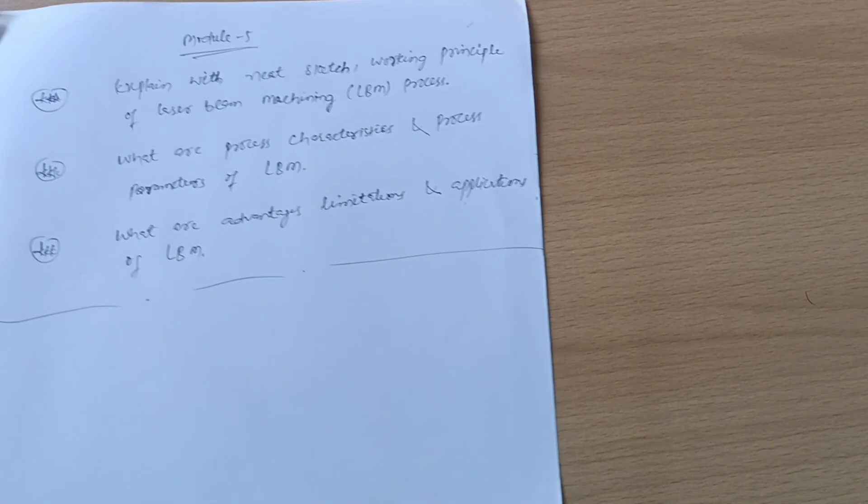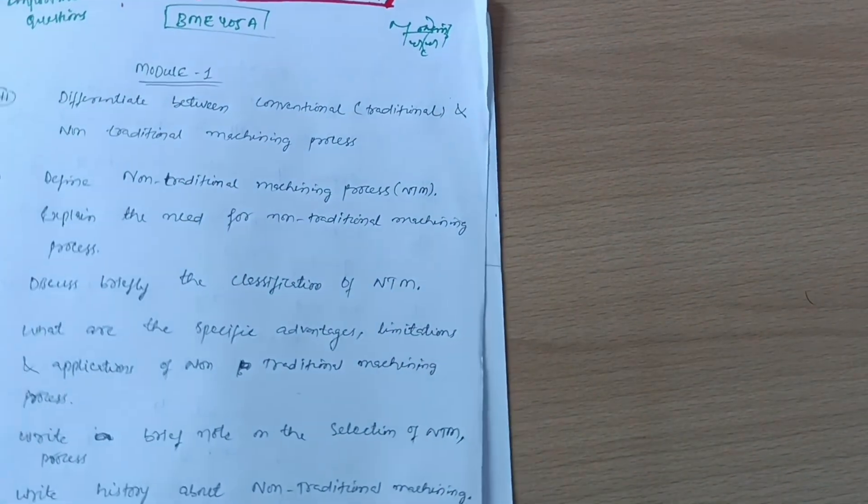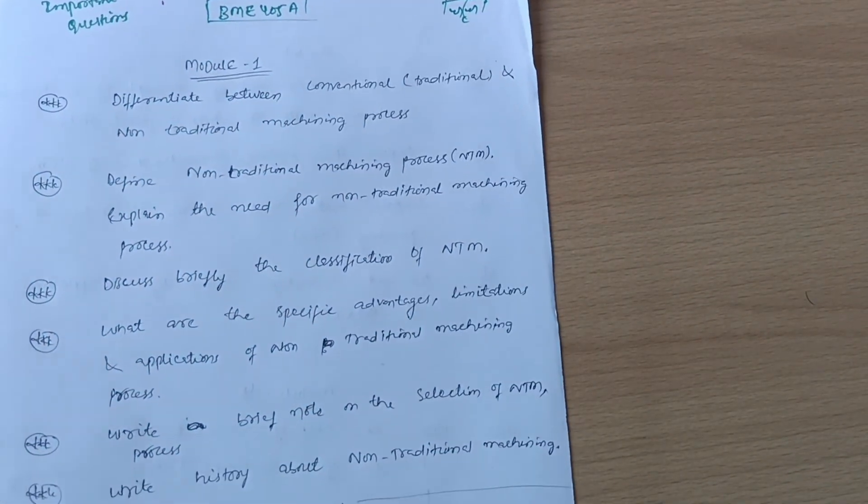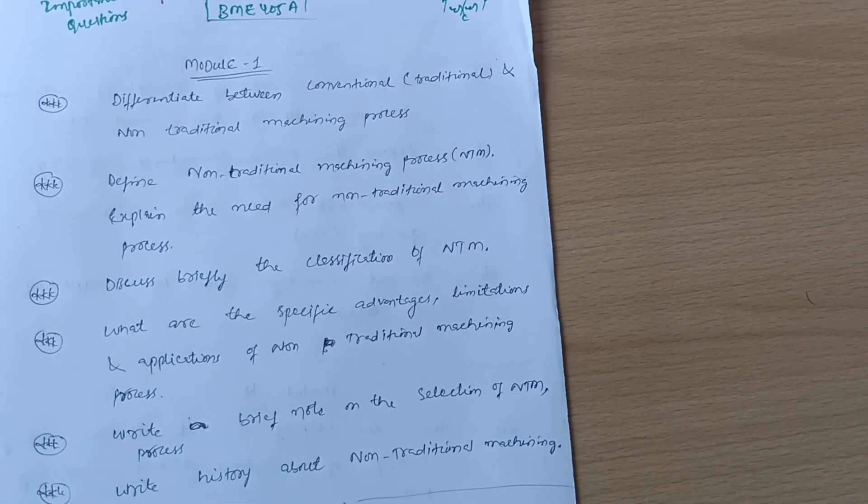You can neglect the other chapter as I earlier mentioned - there are two chapters from each module, so you can only cover one chapter. That way you can pass the subject with flying colors. Not only pass, you can easily score more than 90 marks by this much portion. I'm giving you the assurity about it.